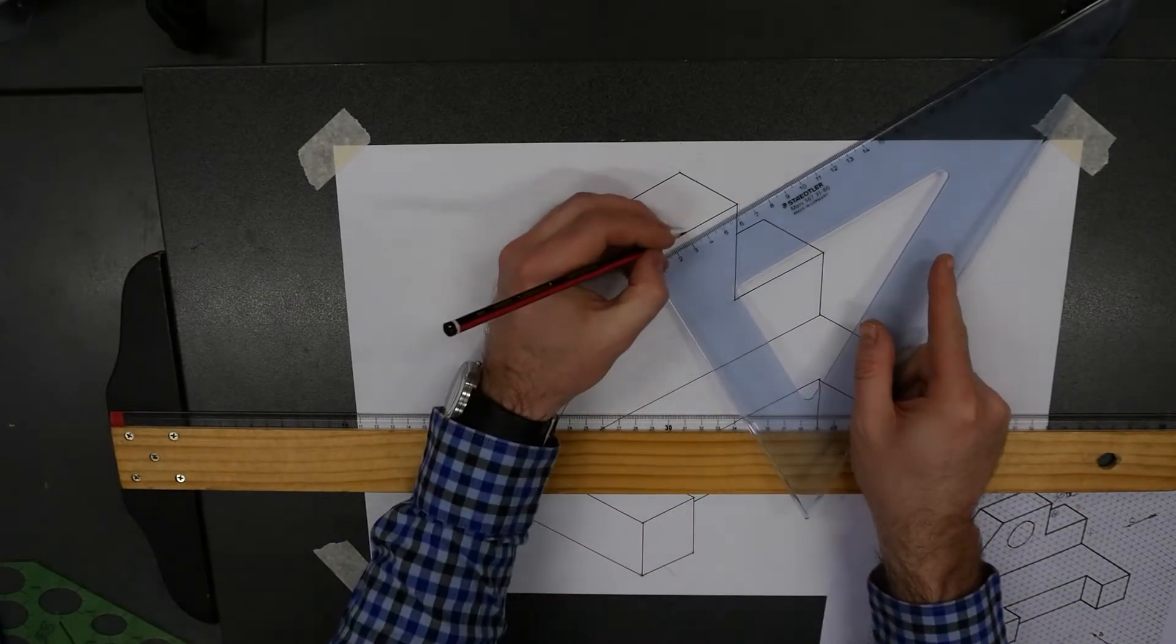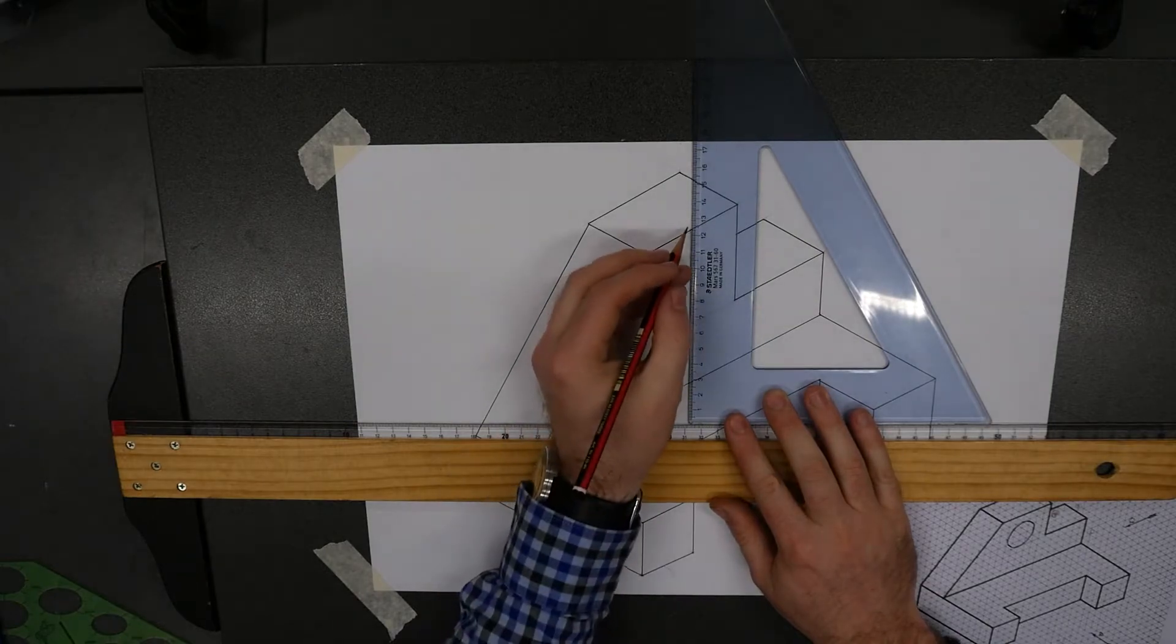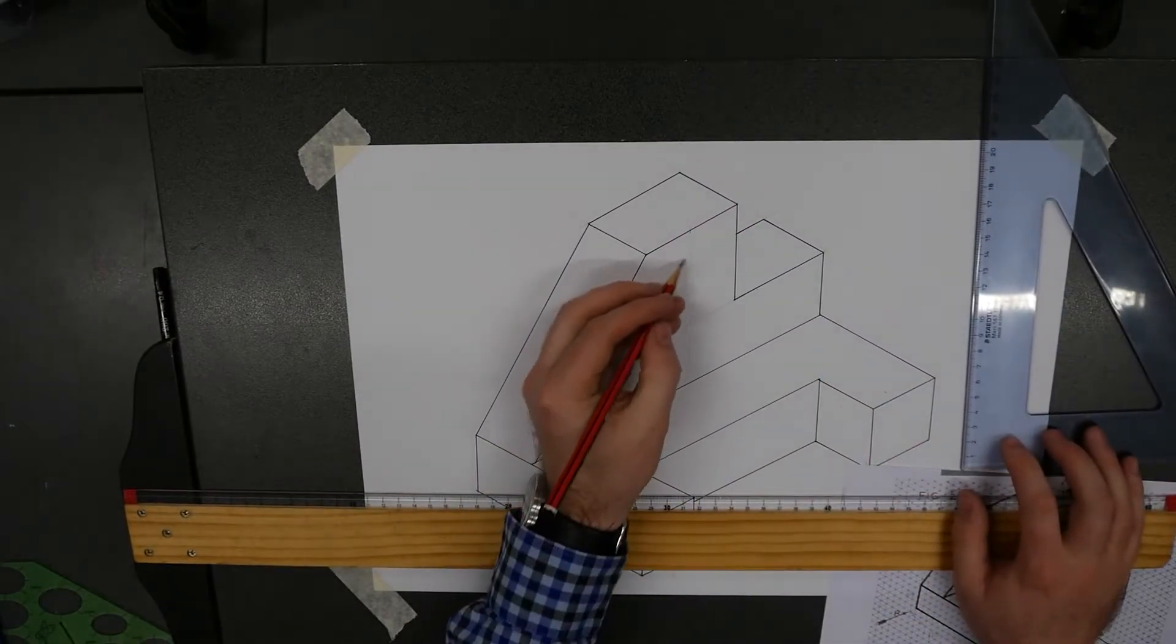Might even work out the midpoint, so 30 is going to be the midpoint. Like that. And so we're going to draw the ellipse in here.